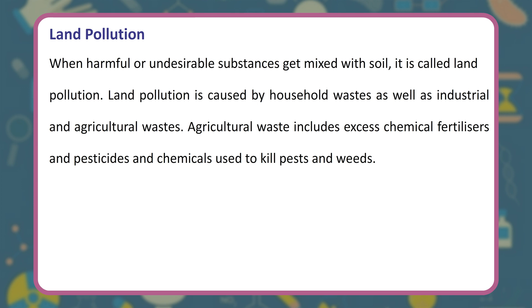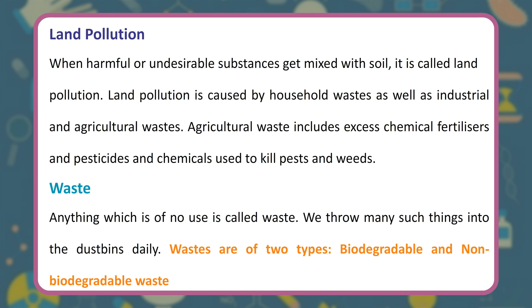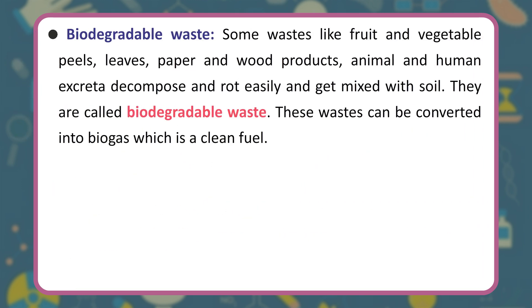Agricultural waste includes excess chemical fertilizers, pesticides, and chemicals used to kill pests and weeds. Anything which is of no use is called waste. Wastes are of two types: biodegradable and non-biodegradable. Biodegradable waste includes fruit and vegetable peels, leaves, paper, wood products, and animal and human excreta — these decompose and rot easily and get mixed with soil. Biodegradable waste can be converted into biogas, which is a clean fuel.